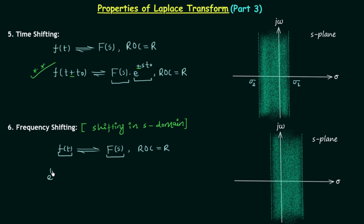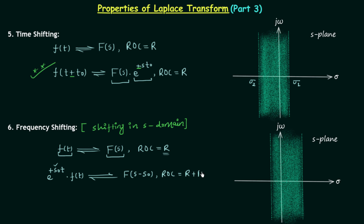If we multiply e^(+s₀t) to the time domain signal f(t), the new Laplace transform becomes F(s − s₀). We have a negative sign here because the original exponential has a positive sign — unlike time shifting, the signs are opposite. The amount of shifting is s₀. The region of convergence does not remain the same; it changes from R to R plus the real part of s₀.